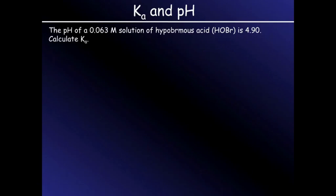Here's another Ka calculation. This time we're given the pH of 4.9 and we are given the initial concentration of hypobromous acid.